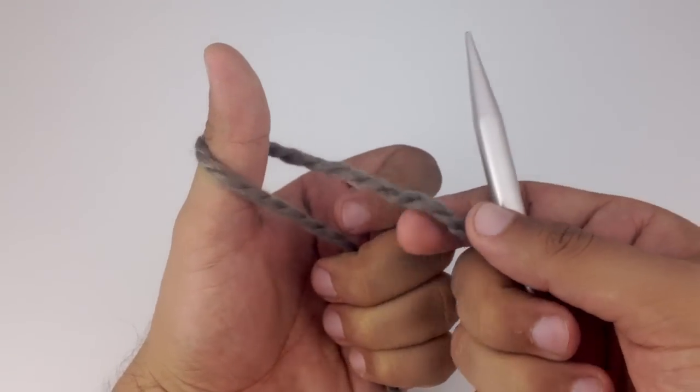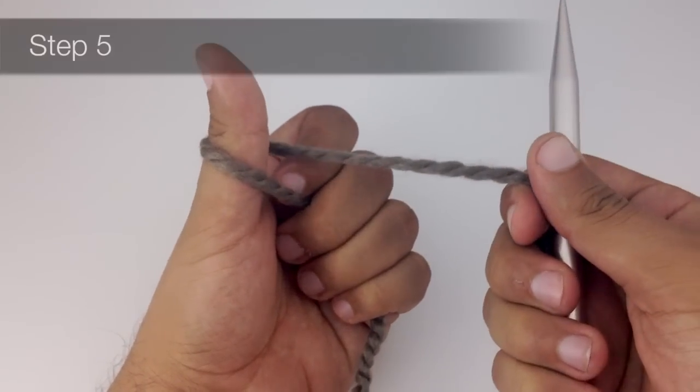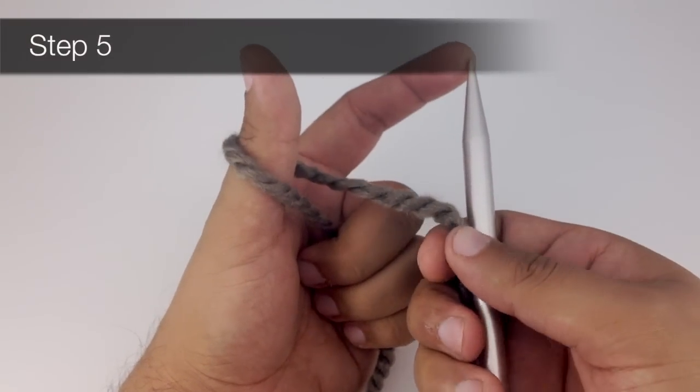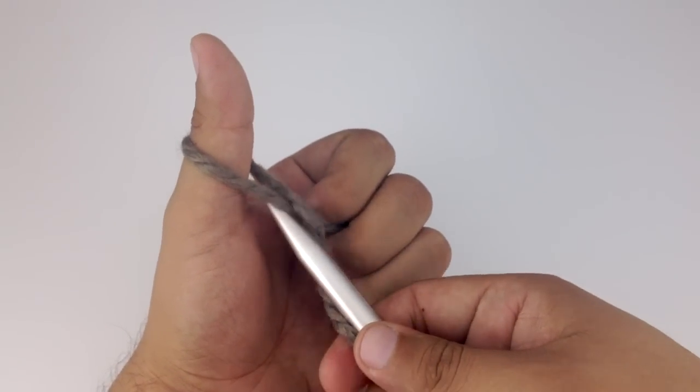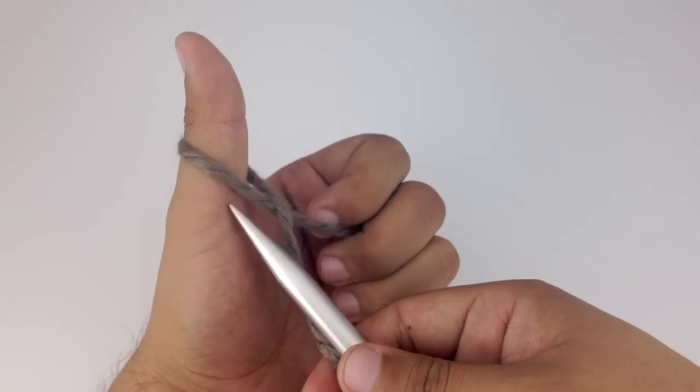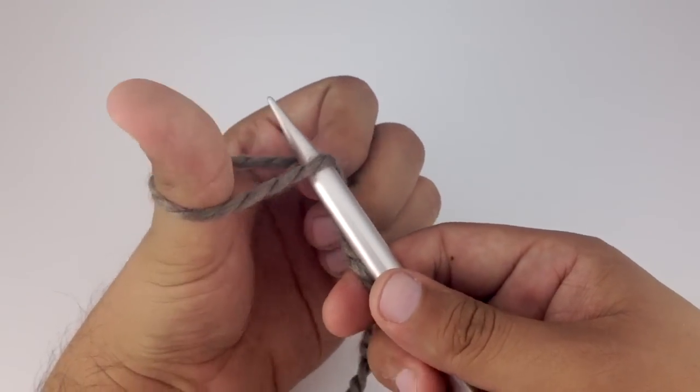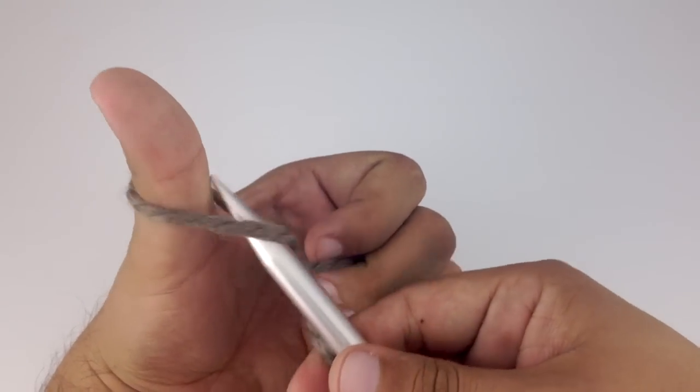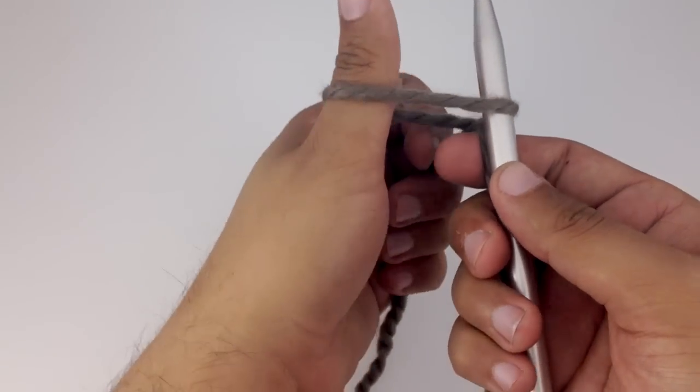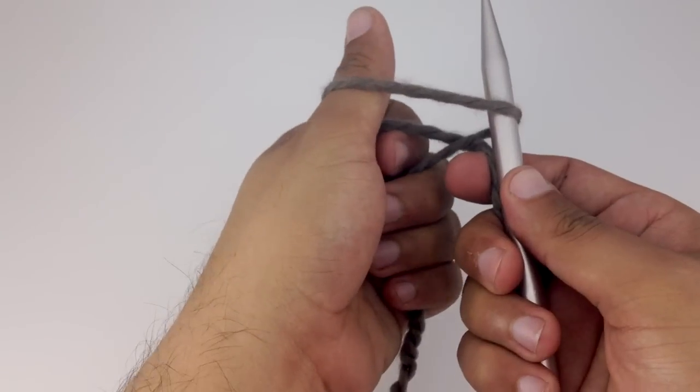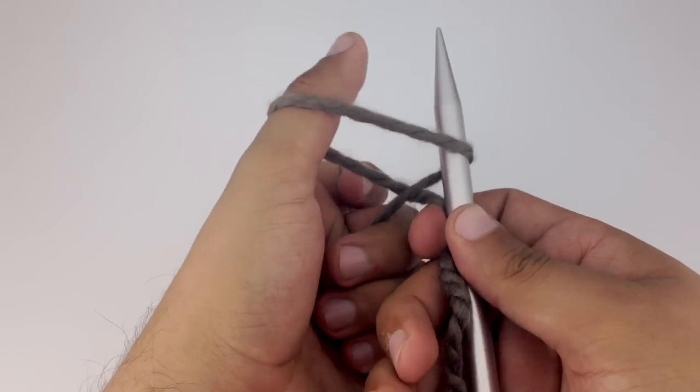For step five, we're going to take the tip of our needle and pick up the loop that's on our thumb. We're going to come right underneath the outside edge and come in between the loop, and we are going to bring it around. So now we can see we've got both our knitting needle and our thumb in the loop that is on our thumb.